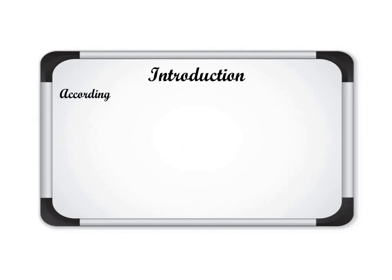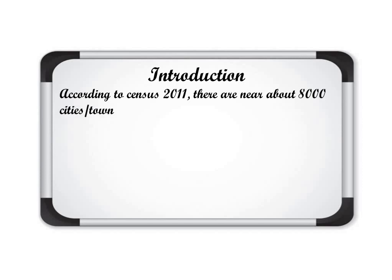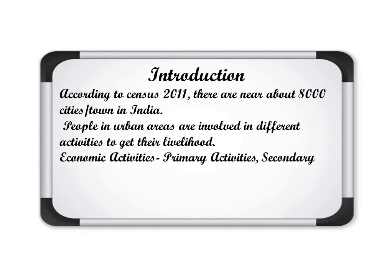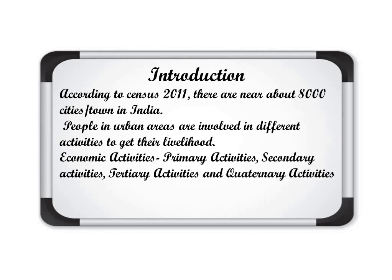According to Census 2011, there are about 18,000 cities or towns in India. Census means counting of people, and it is done in India after every 10 years. People in urban areas are involved in different activities to get their livelihood. We'll discuss the different economic activities: primary activities, secondary activities, tertiary activities, and quaternary activities.